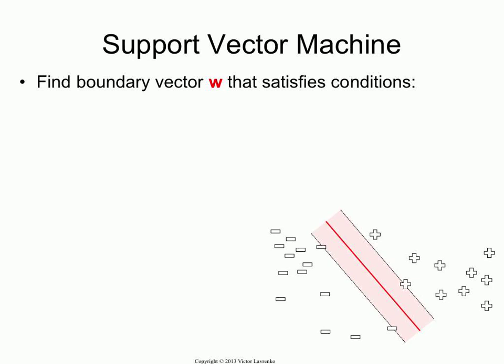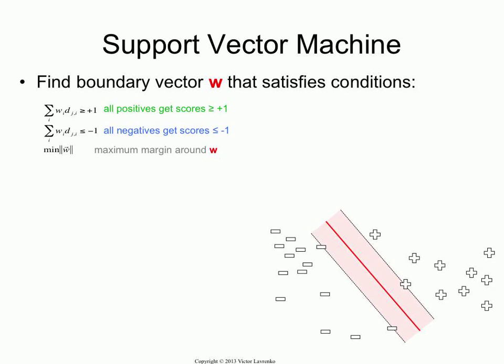PA is always going to be correct for the last example it's seen, but of course it's not always going to be correct for all the examples it's seen. So, if you want guarantees like that, use a support vector machine. It won't scale to Twitter, but you do get guarantees on predictions.